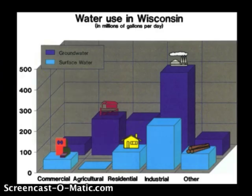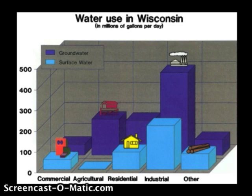So where do we use a lot of this water in Wisconsin? Here's a graph where the darker blue is groundwater and the lighter color is surface water. Industry actually uses a lot of water, whether groundwater or surface water. Agriculture uses quite a bit as well, and they use more groundwater than surface water — a lot of that comes via irrigation.